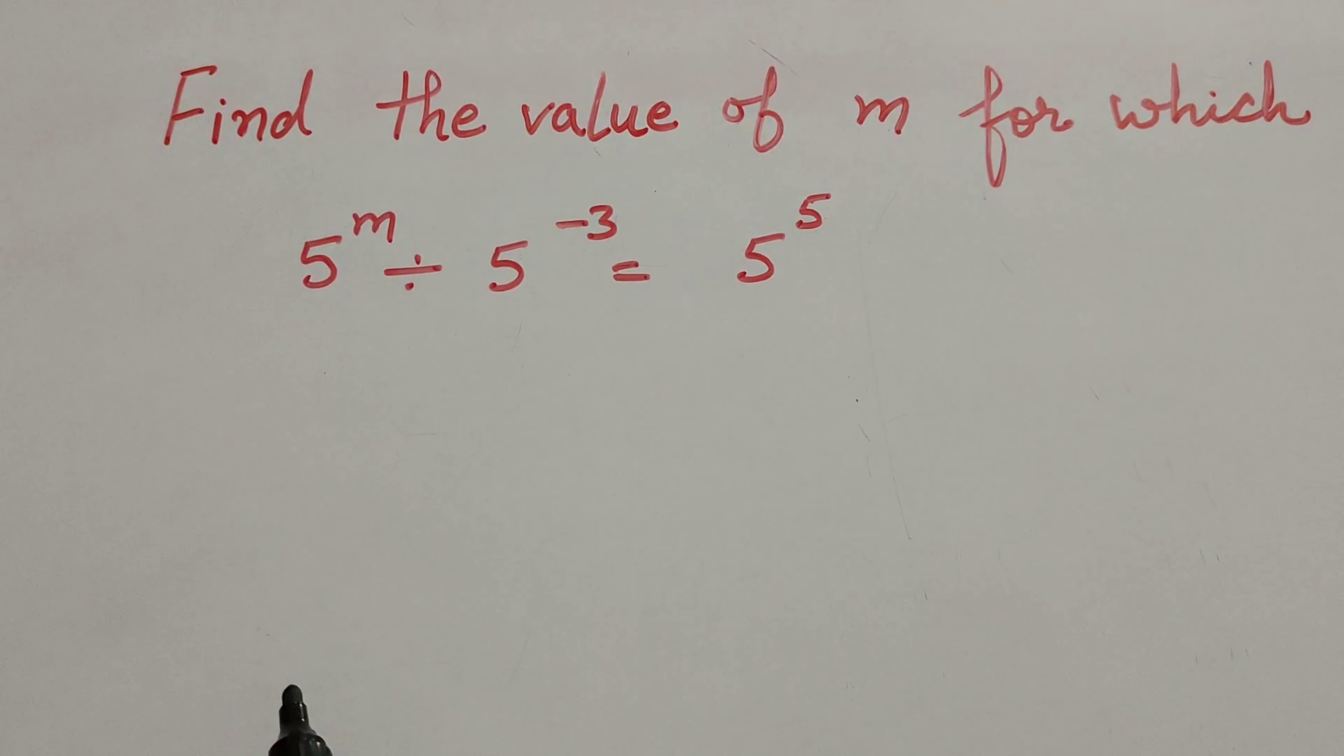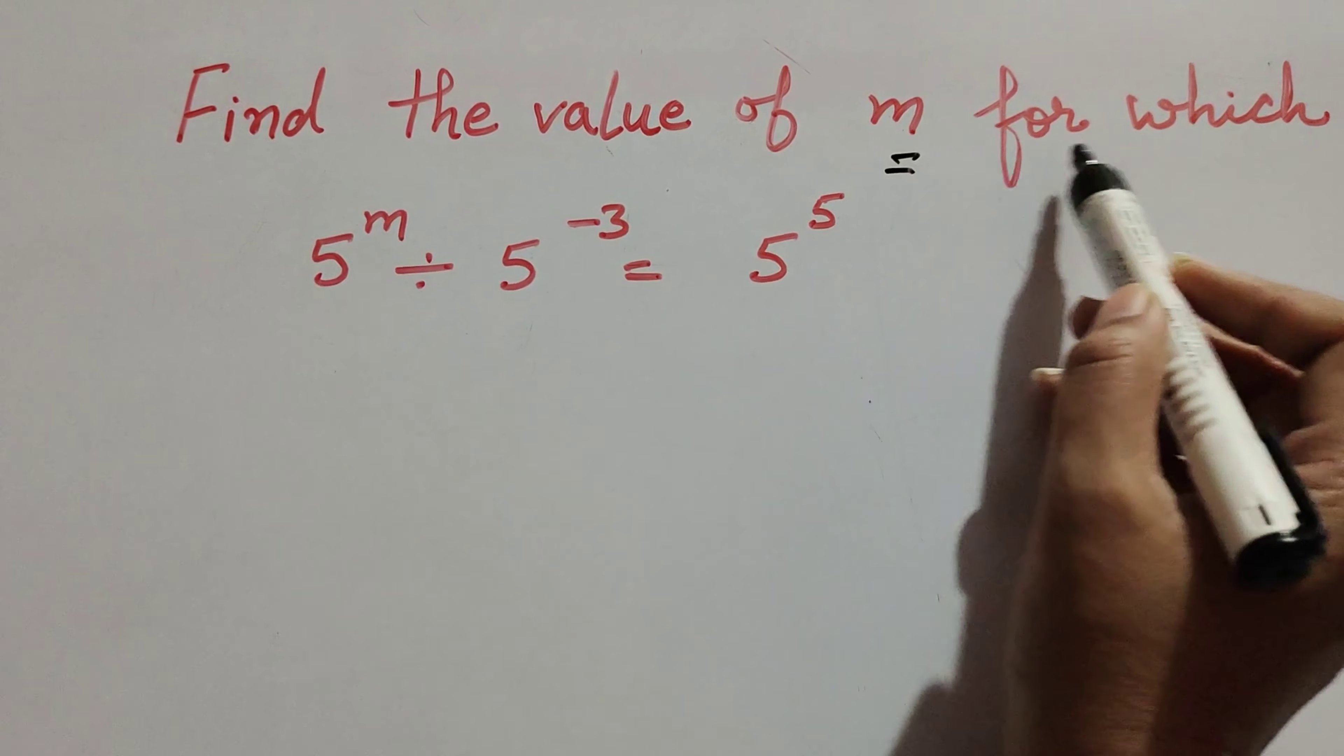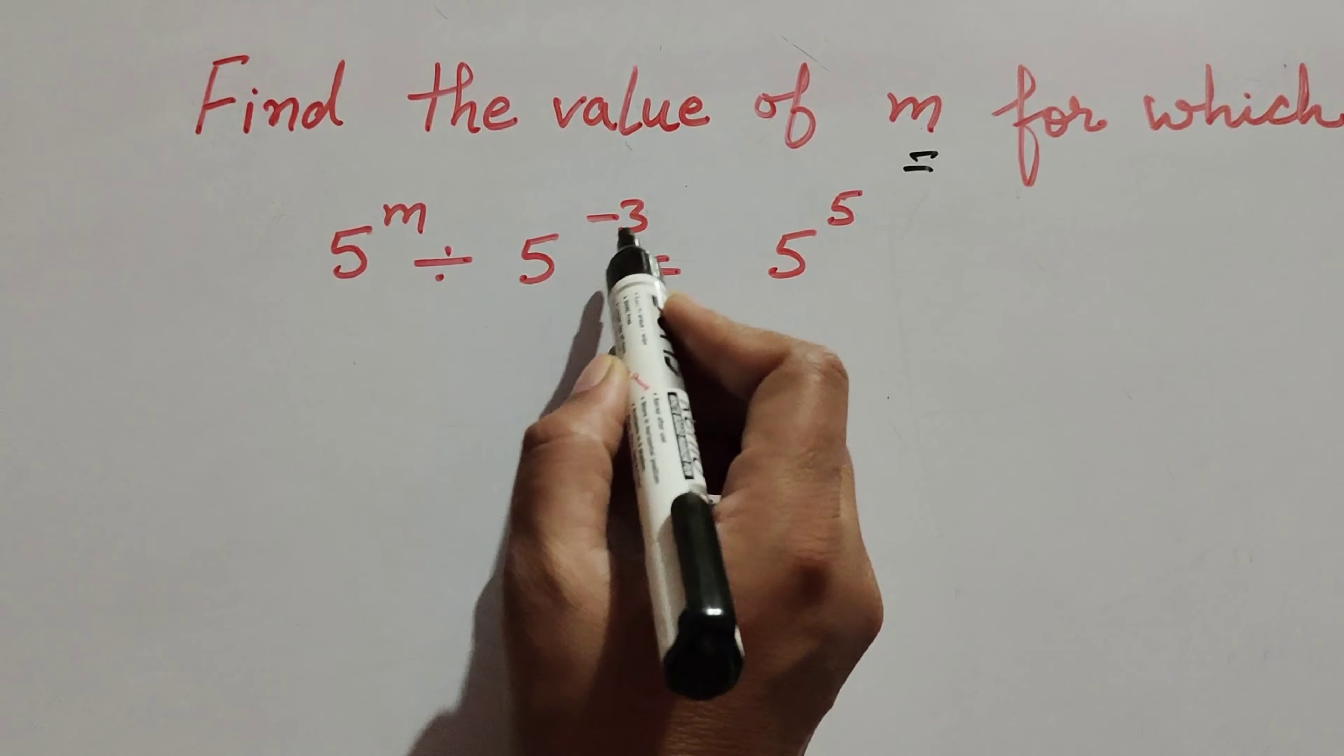Hello friends, welcome to my channel. In this video, we will find the value of m for which 5^m divided by 5^(-3) equals 5^5.